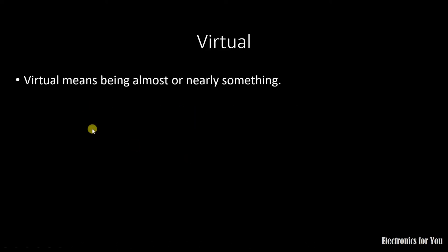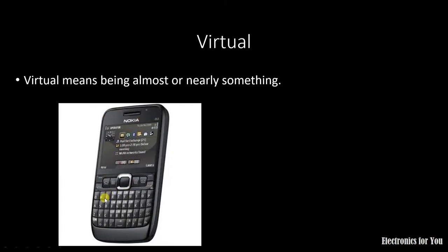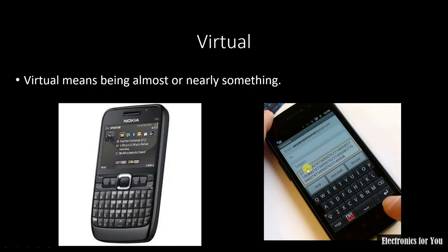Both concepts are extensively used in operational amplifiers. When we say virtual short and virtual ground, the word virtual means being almost or nearly something. For example, this is a mobile phone with a physical keypad. In a second picture, the keypad also appears to exist there, but physically it is not present — it is a virtual keypad.